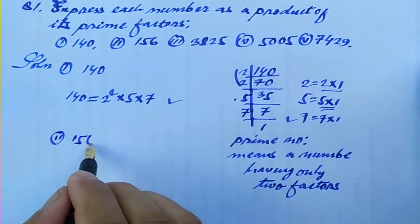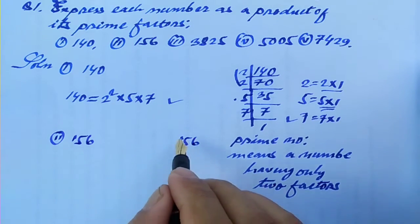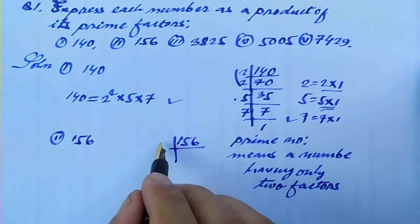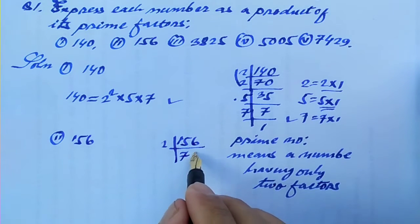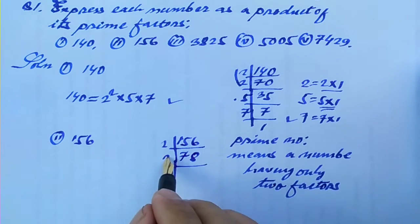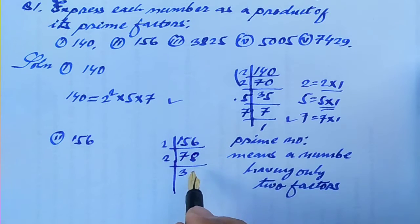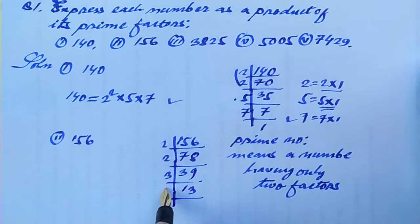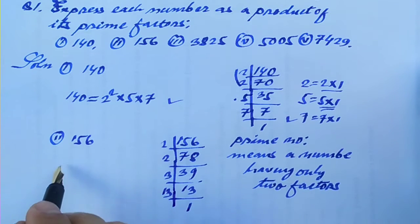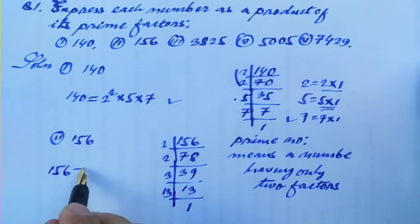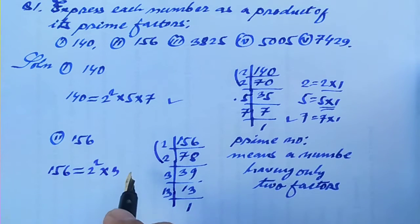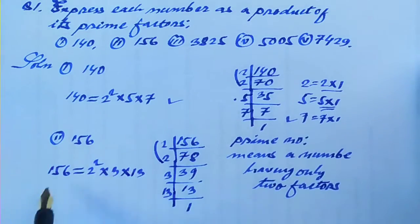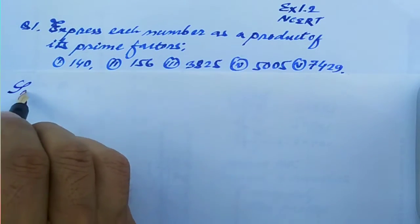Now let us come to Roman numeral 2, which is 156. Let us take the prime factorization of 156. It is divisible by 2 giving 78, then 2 into 39, then 3 into 13, and finally 13 into 1. So the prime factors of 156 are 2 squared into 3 into 13.